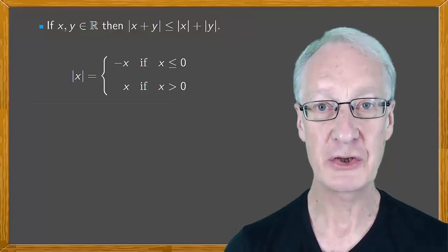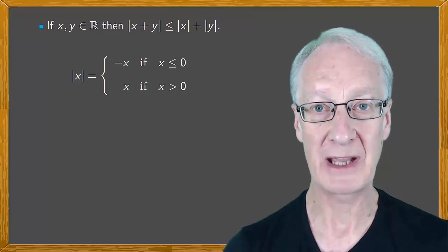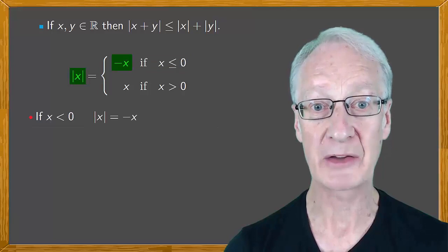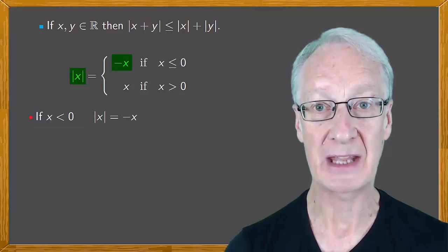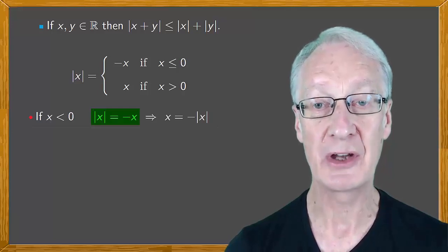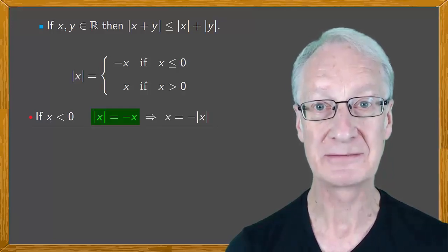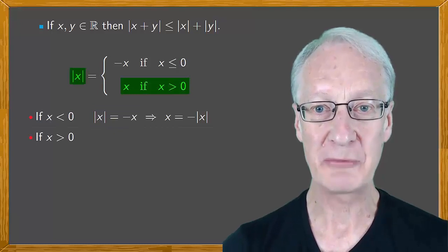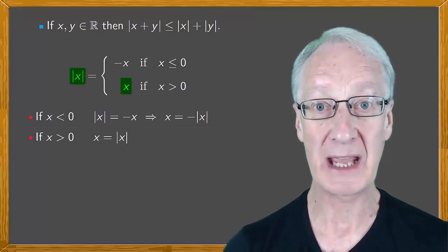From the definition of absolute value, we have that if x is negative, then mod x is minus x. And so we obtain, in this case, that x is minus mod x. If x is positive, we have that x is mod x.